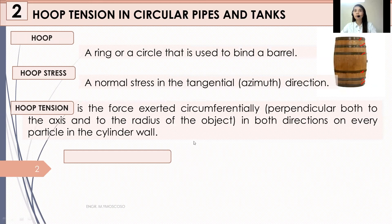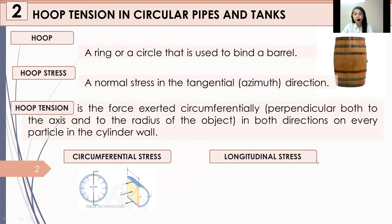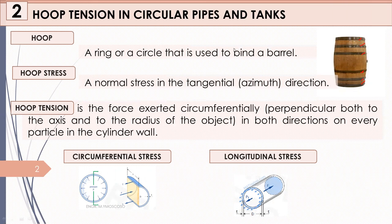In hoop tension, we will discuss two different stresses. First, you have your circumferential stress — and this is what its figure looks like. Next, you have your longitudinal stress, which has this type of figure. Let us define what is the difference between the two stresses.